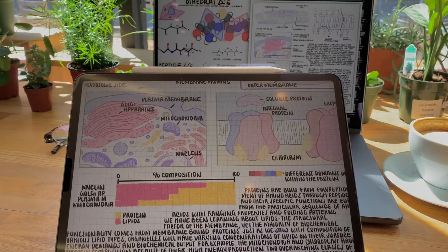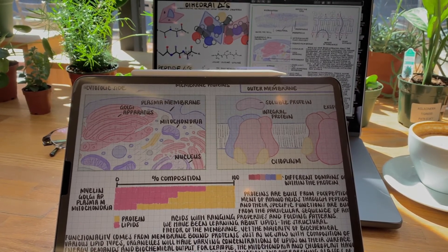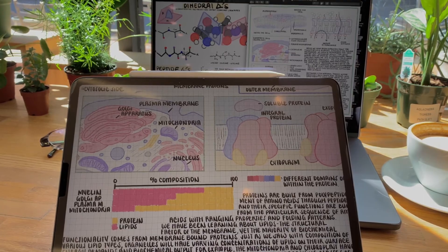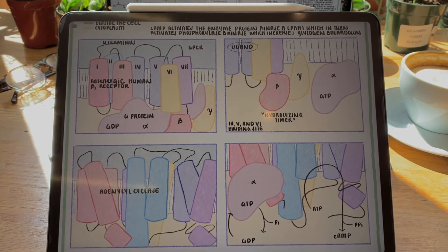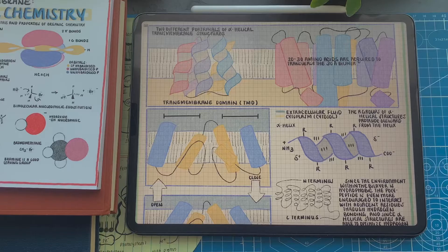The changing interactions of integral and peripheral proteins have with their membrane actually are seen in the difficulty to remove them from the bilayer they associate with. Where peripheral proteins can easily be removed, simply by changing salt concentrations or pH.